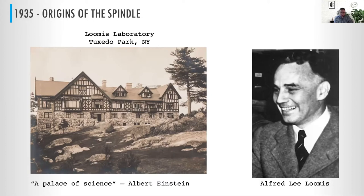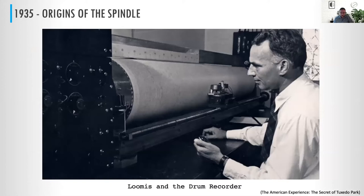They also did things like death rays for small animals, looked at improved timing mechanisms, and some of this work led to the development of ultrasound. Loomis was sort of like an Elon Musk of his day. He was really interested in brain waves — here he is in front of this drum recorder, eight feet long, 44 inches in circumference, revolving once a minute, which they would use to do polysomnography.